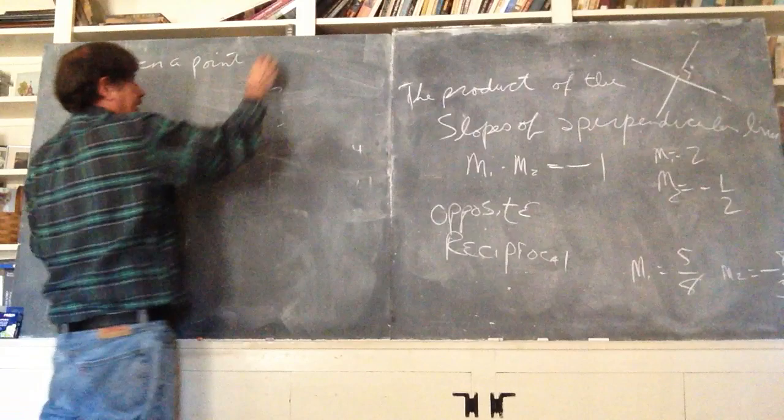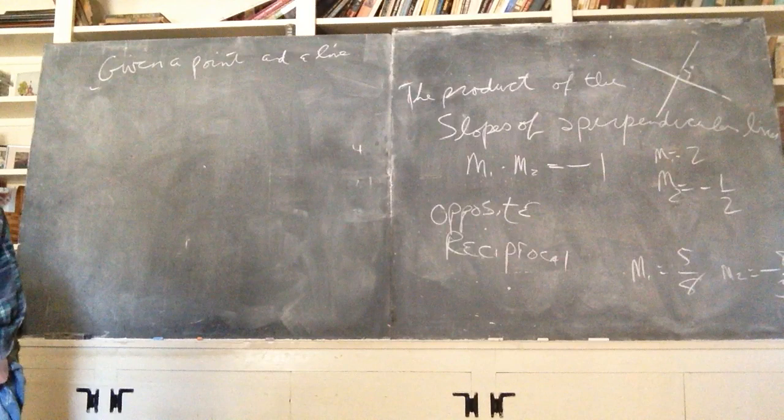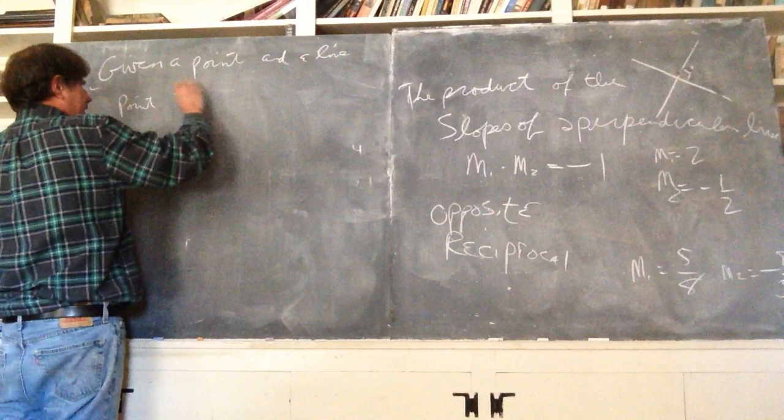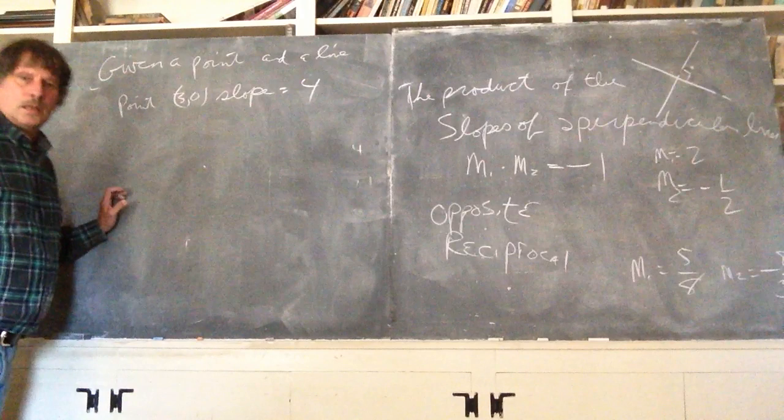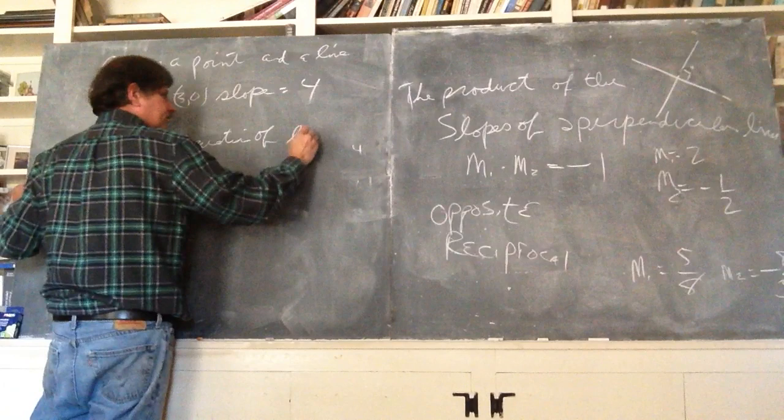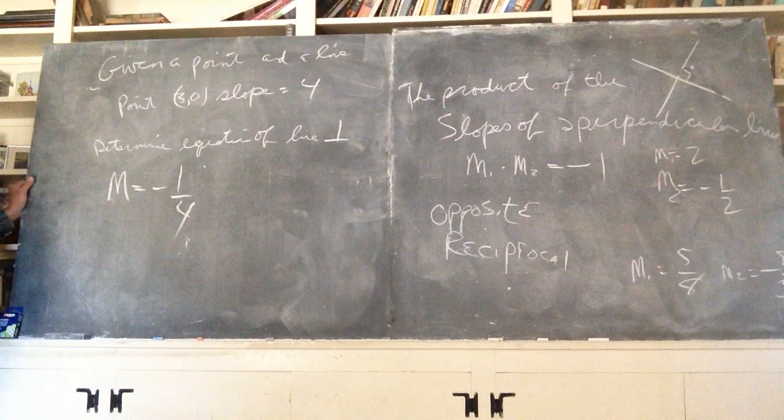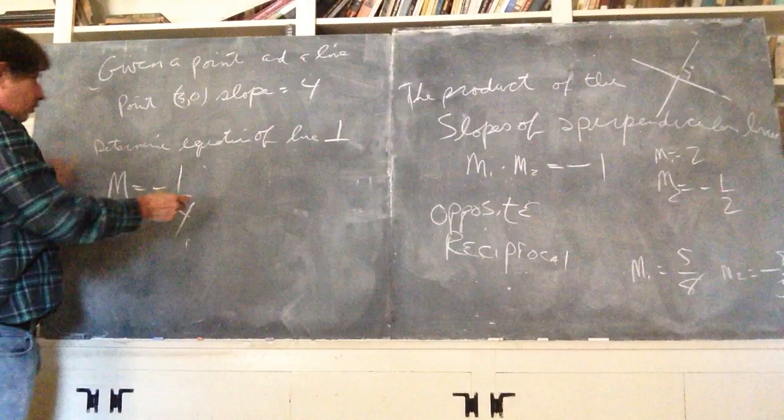give it a point, and a line, and what we want to do is give the equation of a line perpendicular to it. So, for example, the point three zero, slope four. That's what we're given. Determine equation of line perpendicular. Perpendicular to this one. First thing you have to do, there's the slope of the line that's given. Opposite reciprocals. The slope, if this is four, then a perpendicular line is going to be negative one-fourth.